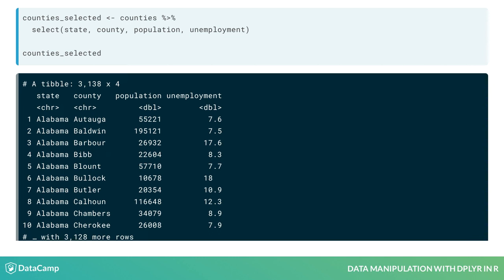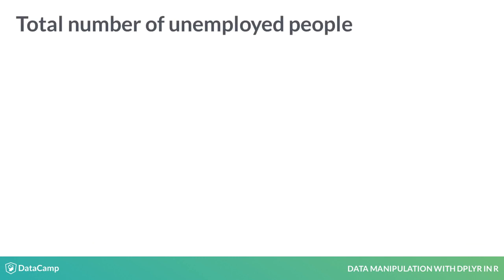The unemployment rate is given as a percentage, so five would mean 5% or 1/20th. What if you were interested in the total number of unemployed people in a county, rather than as a percentage of the population?